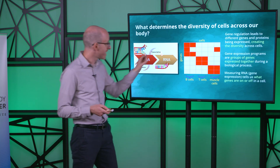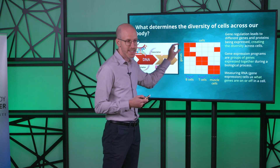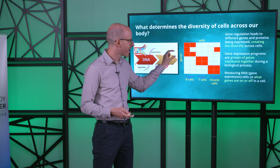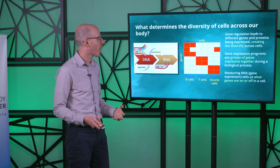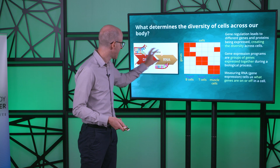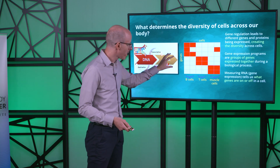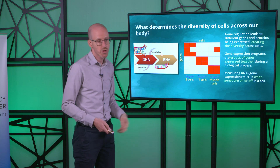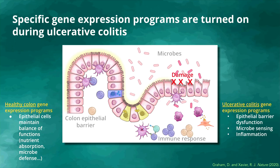We can discover these gene expression programs by taking cells and measuring the expression of the genes inside the cells. To do that, we focus on the RNA — when RNA is made, that means a gene is being expressed. We call these RNA molecules transcripts or gene transcripts. During disease, there's a big change in these gene expression programs — these groups of genes that are regulated together.